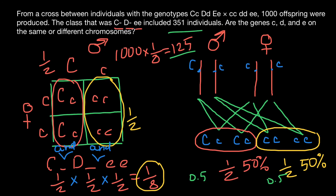These genes are not assorted independently, meaning at least two of them must be on the same chromosome. And this is all for today. Thank you for your attention. Please subscribe for my new videos that I post almost every day. See you in the next video. Goodbye.